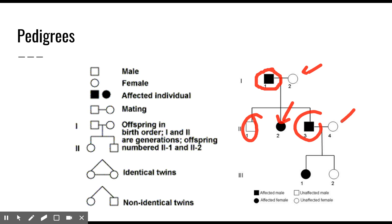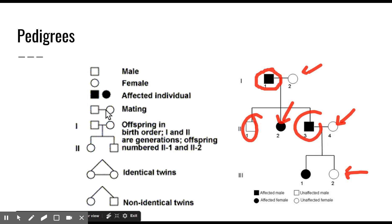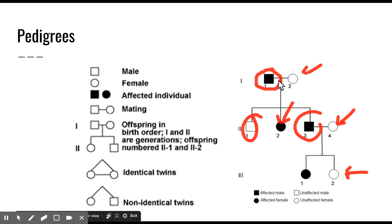Females are represented by circles. When we're looking at different characteristics and genetics, we need to look at how traits are carried from generation to generation. When an individual's shape is colored in, that means they are affected — they are carrying the trait we're looking at. A single line joining a male and female shape shows they have mated and produced offspring. The line coming down from the middle of that joining line takes us to the next generation.